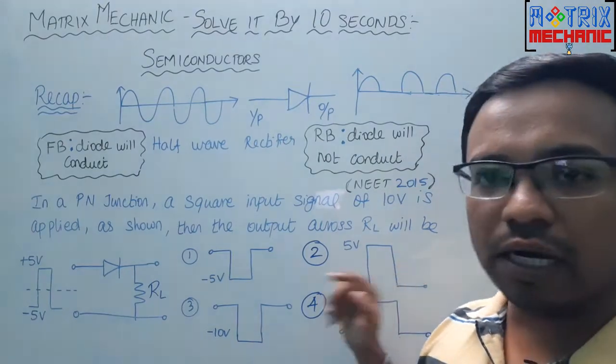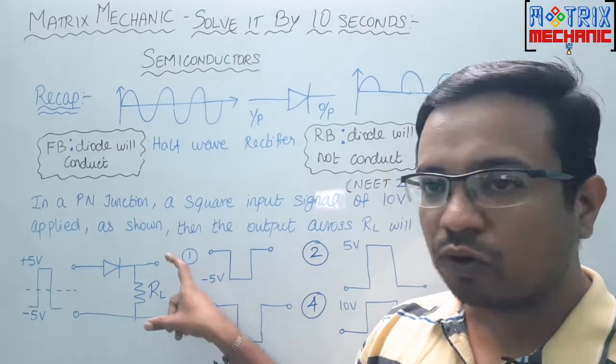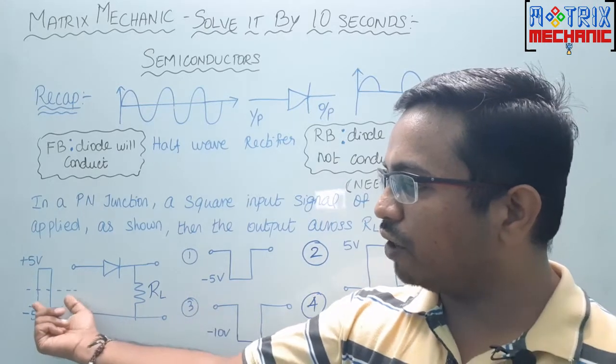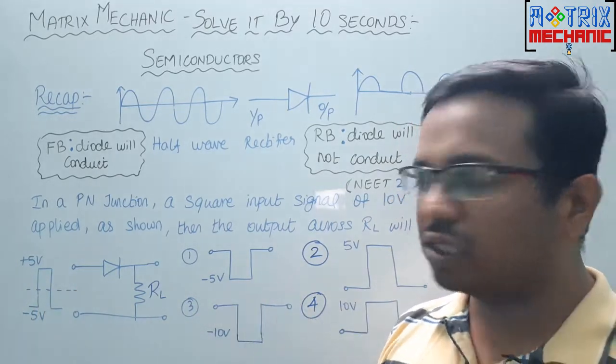Then the output across the RL. RL will be called as load resistor. What is the output across this circuit? In the circuit, they are going to apply this signal voltage. And what is the output?